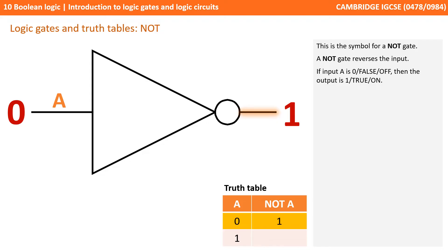This is the symbol for a NOT gate. A NOT gate reverses the input. If input A is 0, false or off, then the output is 1, true or on. If the input A is 1, true or on, then the output is the opposite, 0, false or off.